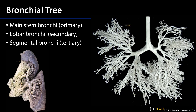Looking here at an endocast of the bronchial tree, this is a posterior view. I can tell that's a posterior view because the trachea here is smooth, so we can't see any of the cartilaginous rings which maintain the patency of the trachea. We can see here the left primary bronchus and here is the right primary bronchus.